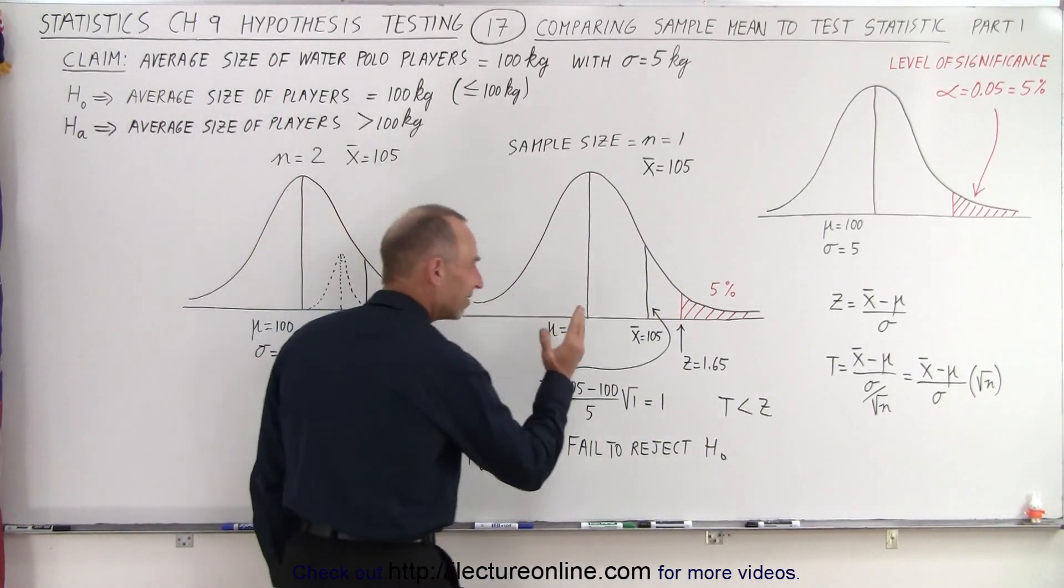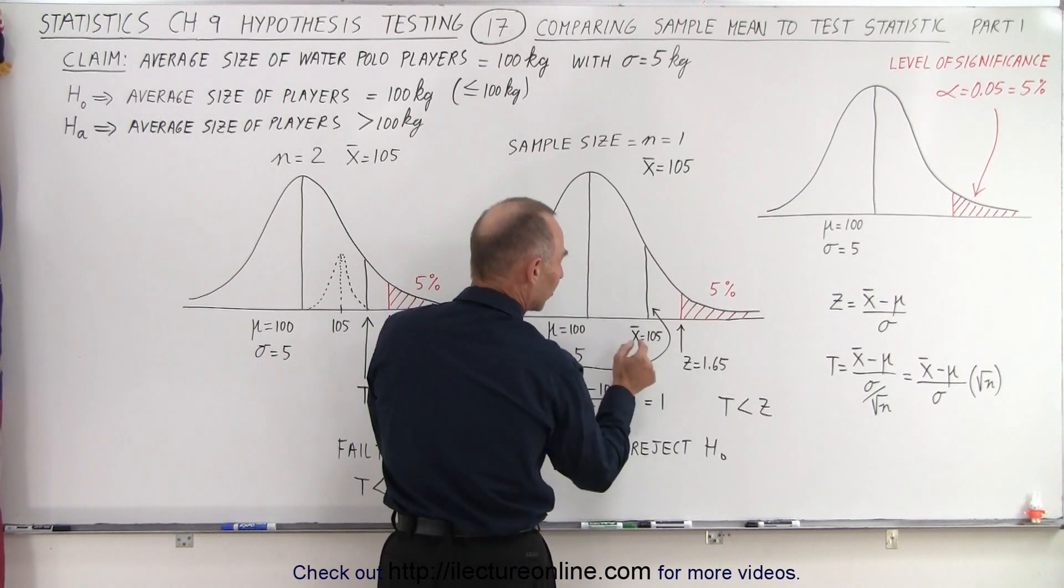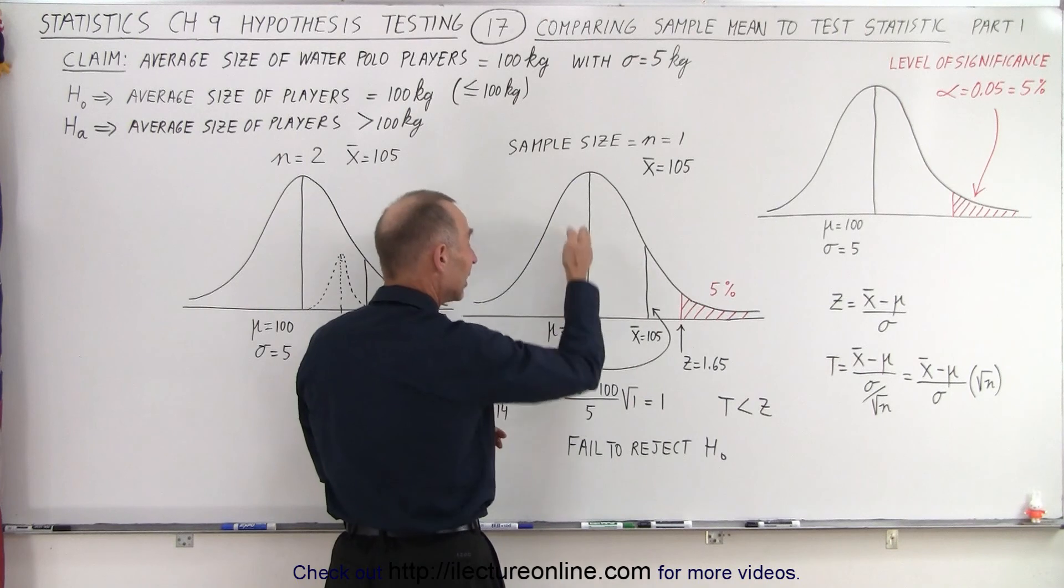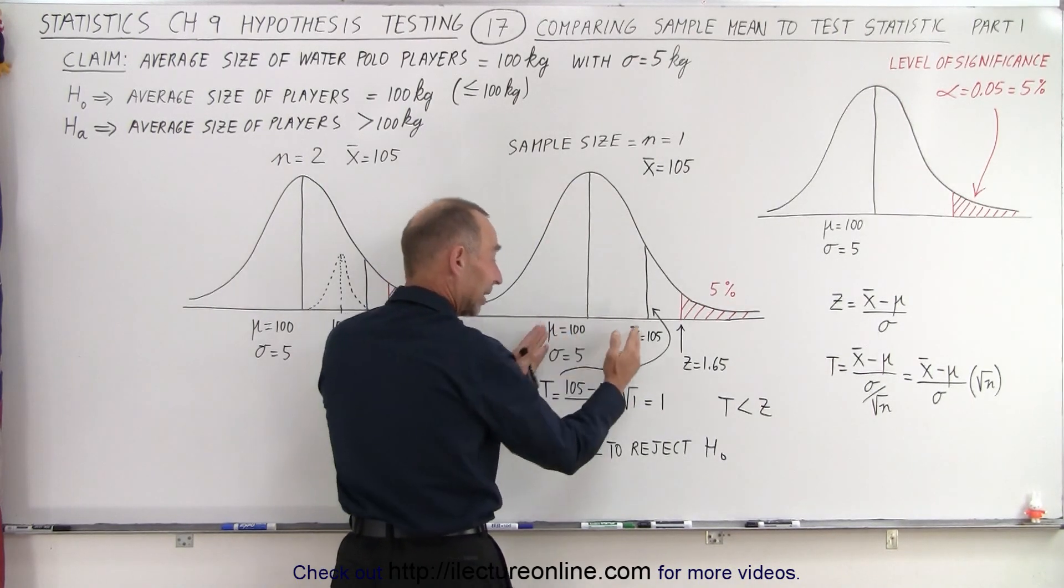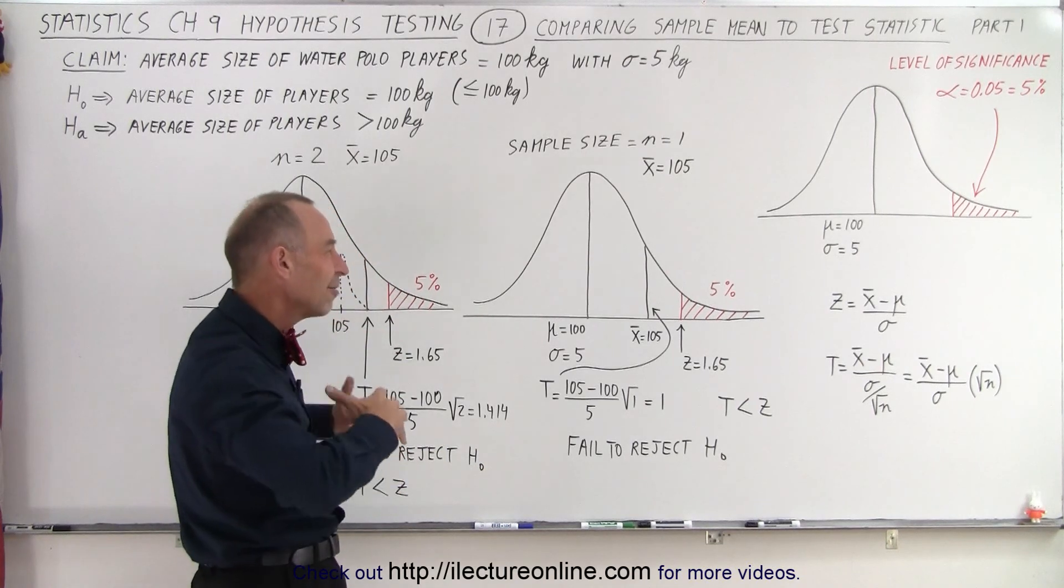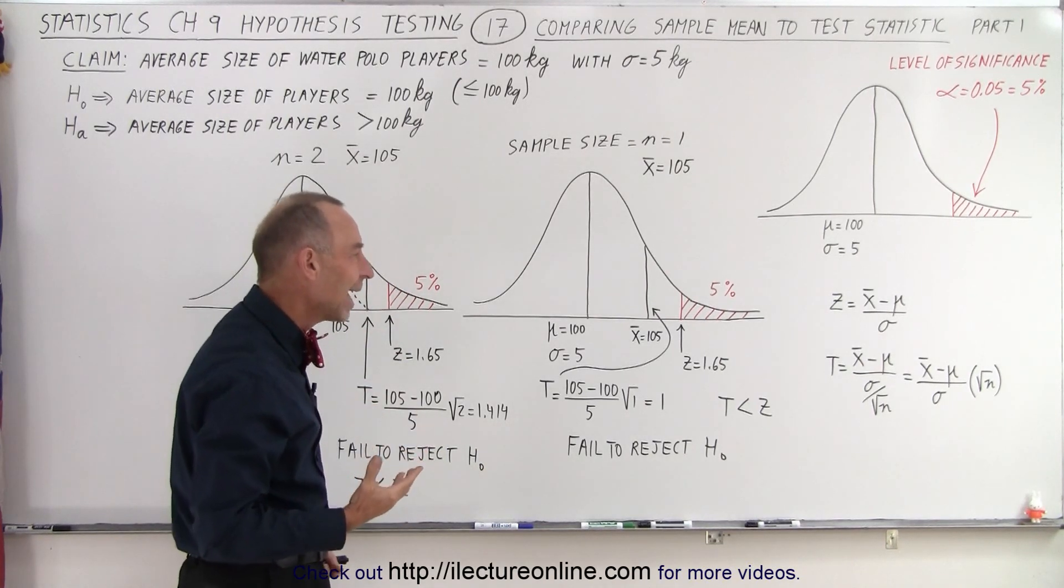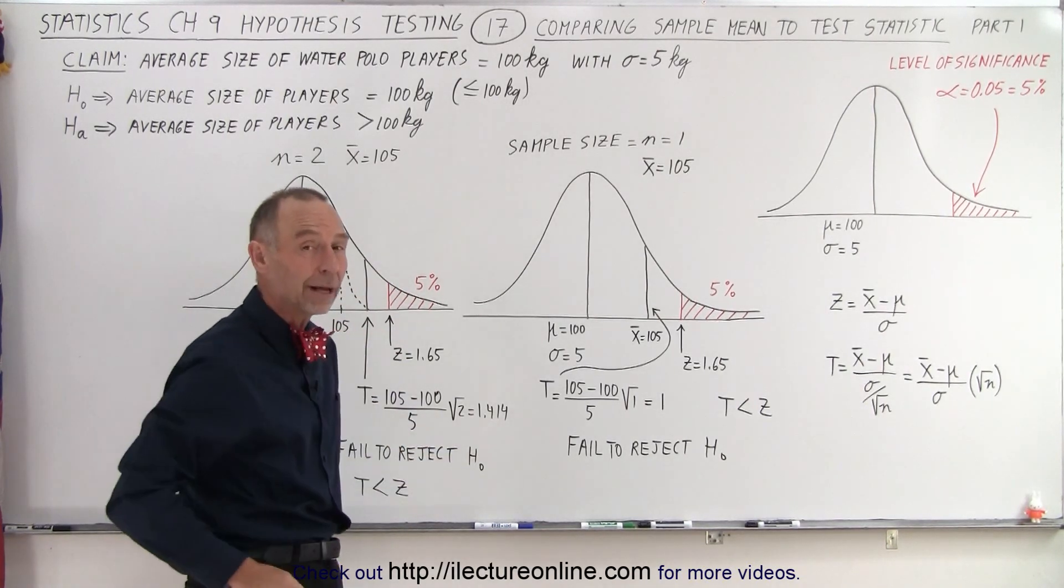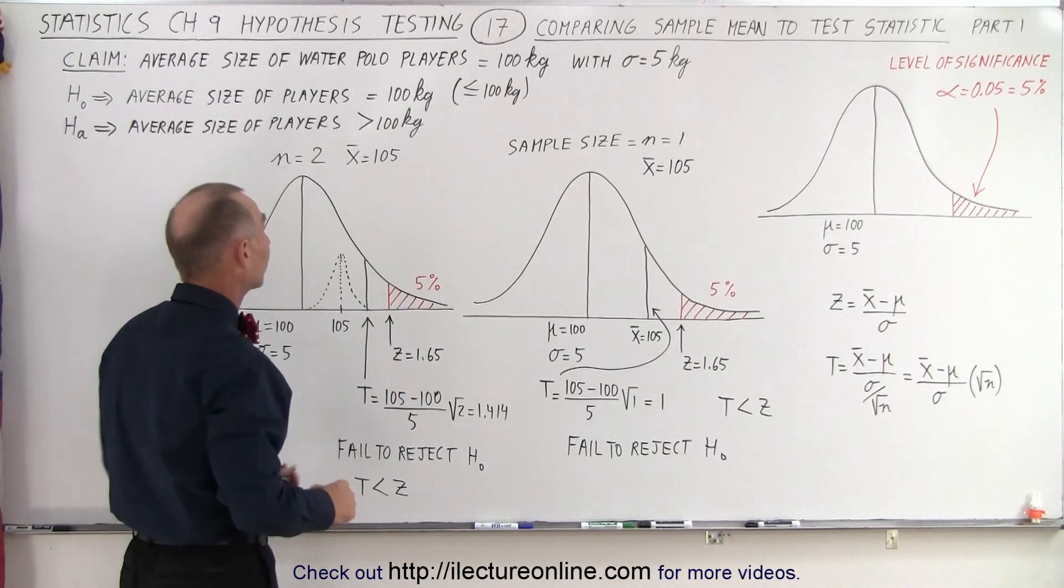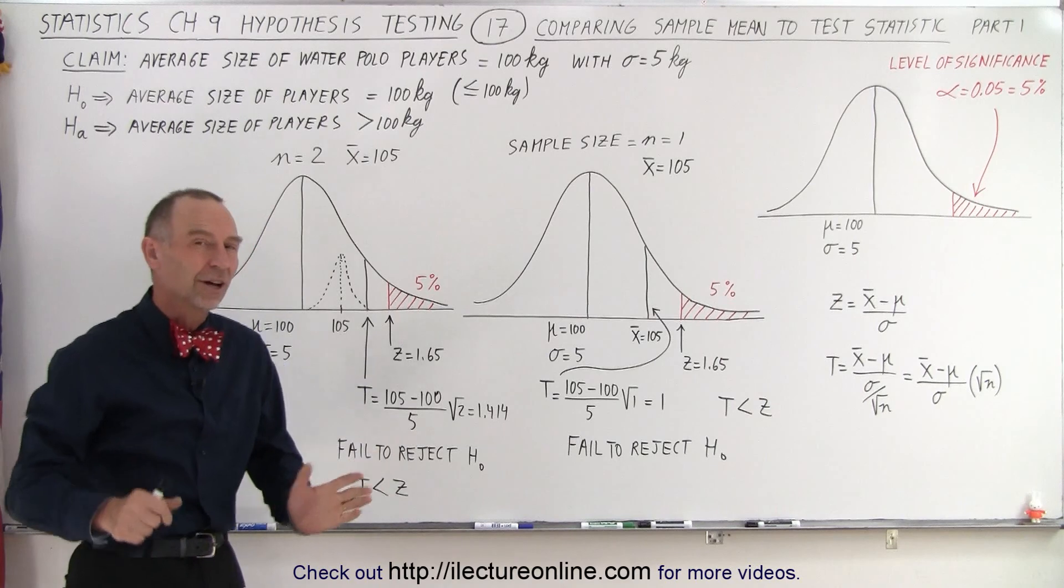With one sample, even though the mean of the sample is 105 for the one sample and the mean of the population is 100, that's a significant difference. But since we only picked one, we don't have enough confidence that we should be able to reject the null hypothesis. That means we're still going to say the average size of water polo players is 100 kilograms.